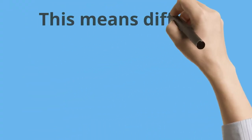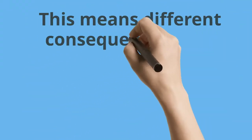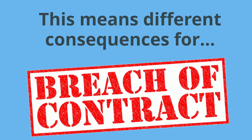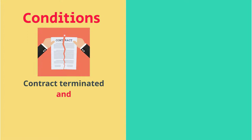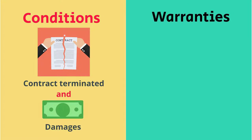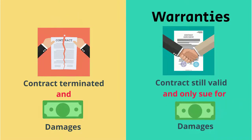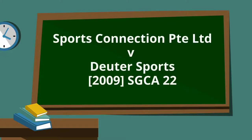This means that there are different consequences upon a breach of the contract terms. Where there is a breach of a condition, the claimant will be able to terminate the contract and sue for damages. Whereas for a breach of a warranty, the contract remains valid and he can only sue for damages.